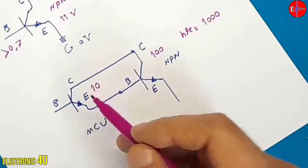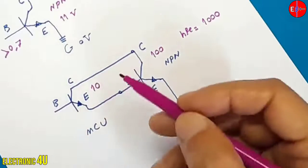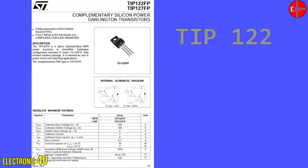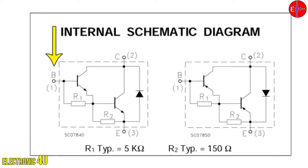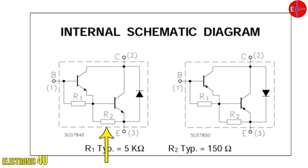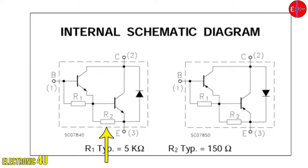Because the two transistors are connected, the base-emitter voltage must be higher. In a Darlington package transistor like TIP122, there are two internal resistors used to turn off the transistors. When the base current of the first transistor is cut off, the power transistor may still be on. So R2 resistance is placed between the base and the emitter to turn off the main transistor, and R1 is placed between the base and the emitter to turn off the first transistor.